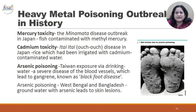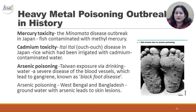Heavy metal poisoning outbreaks in history are well documented. Mercury toxicity led to the Minamata disease outbreak in Japan where fish contaminated with methylmercury was consumed. Cadmium toxicity led to the Itai-Itai (Ouch-Ouch) disease in Japan where rice irrigated with cadmium-contaminated water was consumed. Arsenic poisoning has been seen in Taiwan via drinking water, leading to severe vascular disease and even gangrene known as Blackfoot disease. Arsenic poisoning is also very common in West Bengal and Bangladesh where groundwater is contaminated with arsenic, leading to characteristic skin lesions.